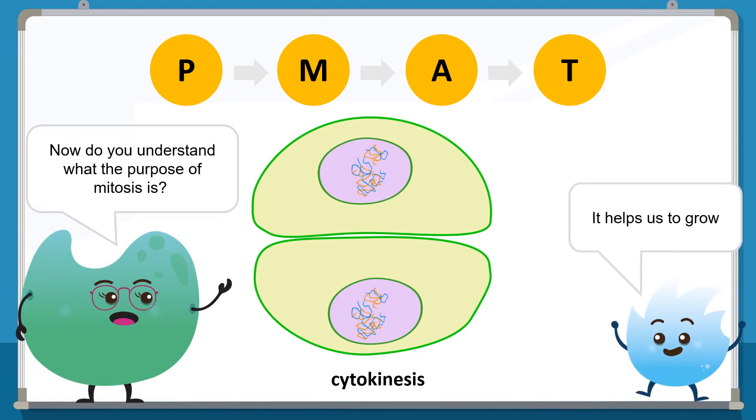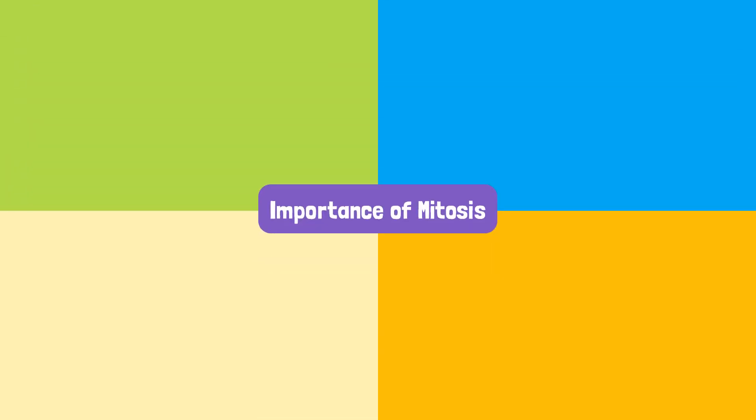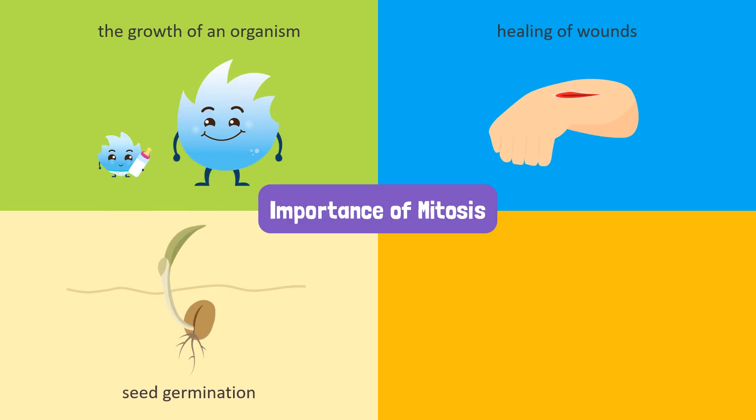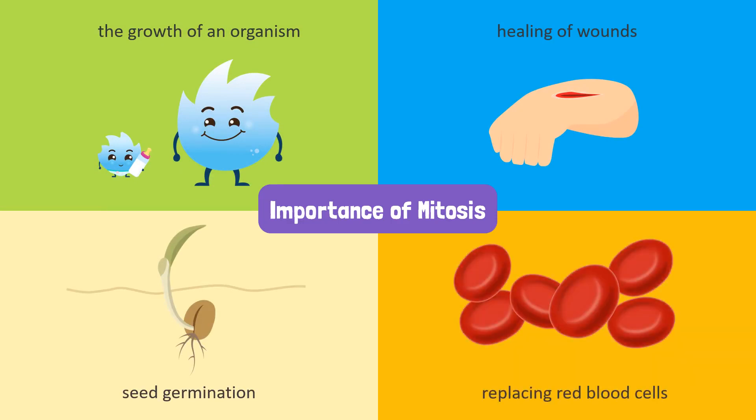It helps us to grow. Yes, not only is mitosis important to make new cells which allows for the growth of an organism, it is also necessary for the healing of a wound, seed germination, and even replacing red blood cells.